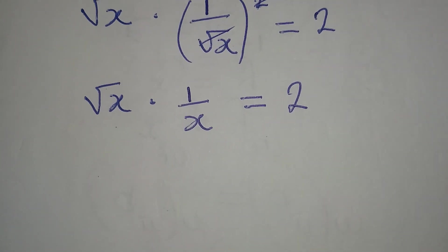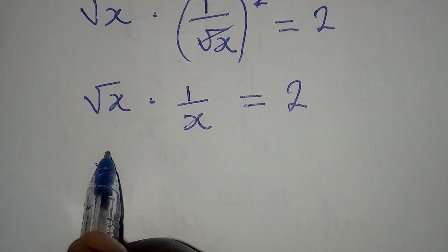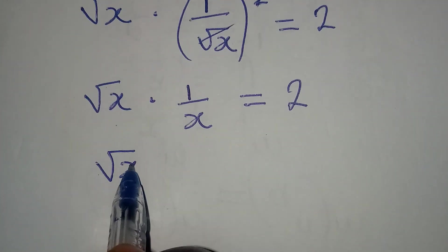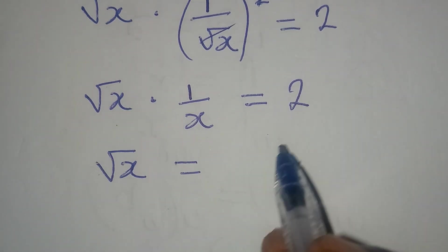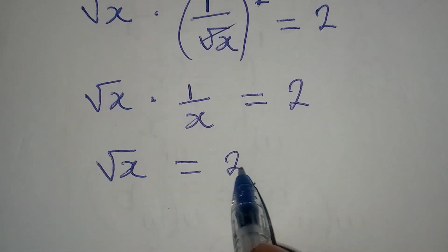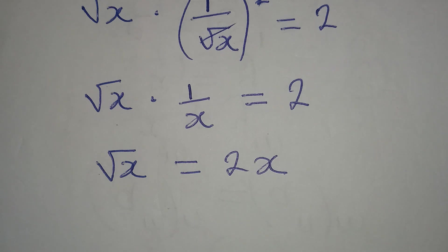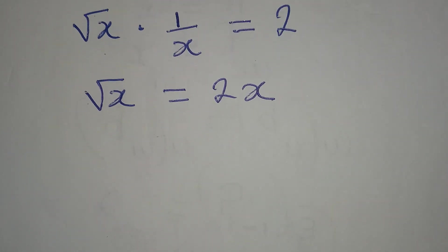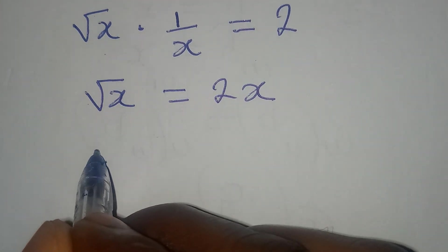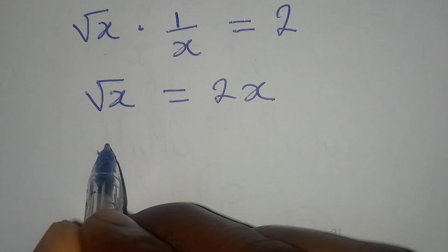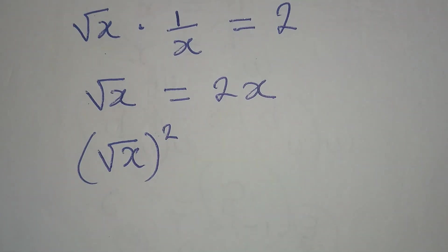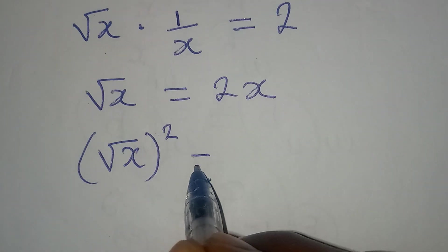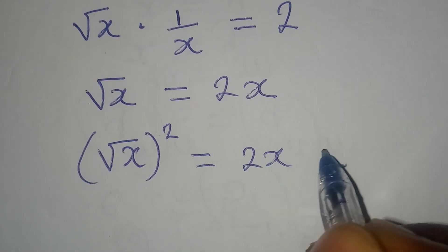The next thing we are going to do is cross multiply, so that we have square root of x equal to x times 2, and that will give us 2x. Then we are going to take the square of both sides — we take the square of square root of x and then we take the square of 2x.